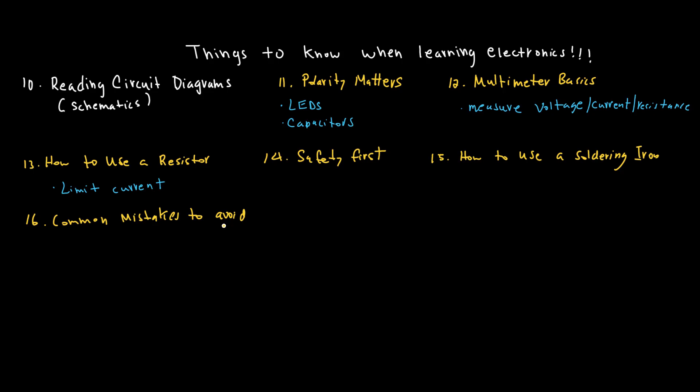Learn about common mistakes to avoid: short circuits, reverse polarity, and connecting parts to the wrong pins are beginner mistakes. Take your time and double-check. Learn about using a switch. A switch controls the flow of current—you can use it to turn a circuit on and off manually. You have to learn to read data sheets. Every component has a data sheet that tells you its limits and how to use it. Learn how to find and understand one.